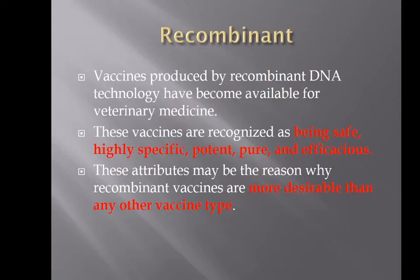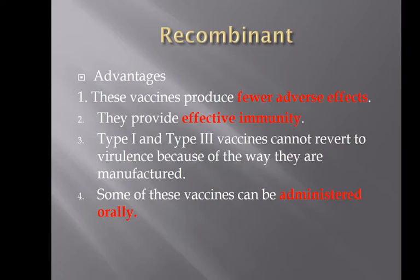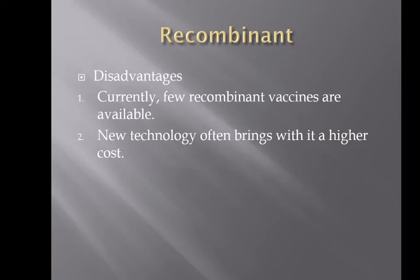Recombinant vaccines are produced by recombinant DNA technology, and they're starting to become more available in veterinary medicine. They're safe, highly specific, potent, pure, and efficacious — so they are more desirable than any other vaccine type. They do have fewer adverse effects and provide effective immunity. Type 1 and type 3 vaccines cannot revert to virulence because of the way they're manufactured, and some can be administered orally. Disadvantages: very few are available, and because it's new technology, there is a higher cost associated with it.